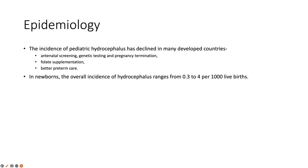The incidence of pediatric hydrocephalus has declined in developed countries due to better prevention of post-hemorrhagic and post-meningitic hydrocephalus in preterm and neonatal patients, improved antenatal screening, genetic testing, pregnancy termination for severe CNS anomalies, folate supplementation preventing neural tube defects, and better preterm care avoiding IVH and neonatal meningitis complications. Overall incidence in newborns remains around 0.3 to 4 per 1000 live births, still a significant number.